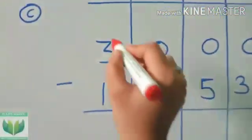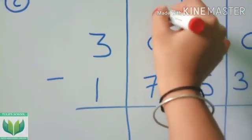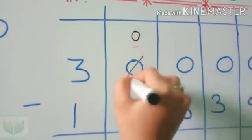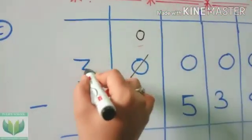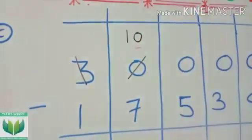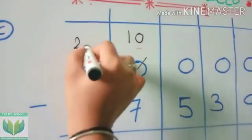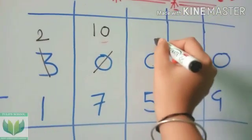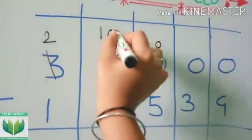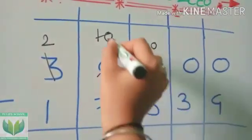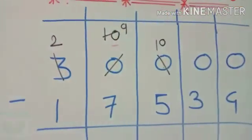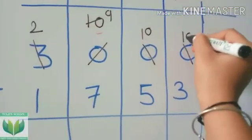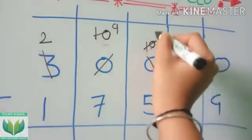But we have to take 1. We have to take 1 from the 3. Now here becomes 10, and 3 becomes 2. Now again 0 minus 5 is not going. Again we have to take 1 from this 10, and 10 becomes 9.